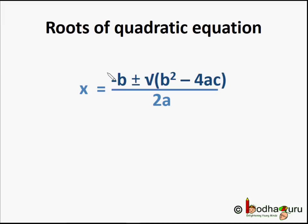So we can say the roots of the quadratic equation ax² + bx + c = 0 are given by (-b ± √(b² - 4ac)) / 2a.